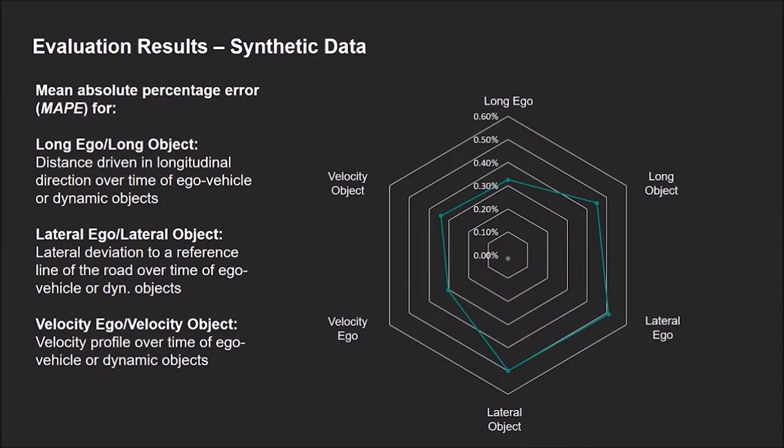For this reason, as a statistical measure is used the mean absolute percentage error for six different characteristics related to the ego vehicle and the average object behavior. For example, velocity ego, velocity object describes the average deviation in the velocity of the ego vehicle, respectively the object, over time between the original data set and the X-in-the-loop re-simulation.